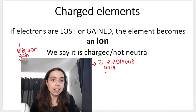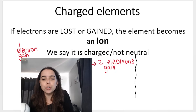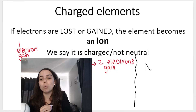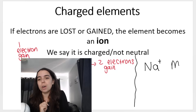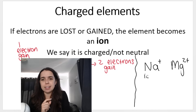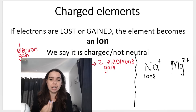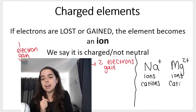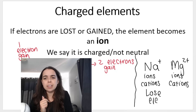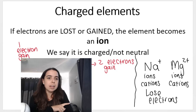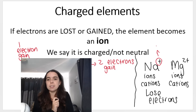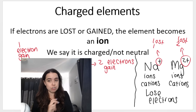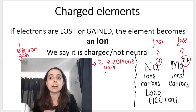An atom can also lose an electron. If you lose something that's negative, you become positive — you form what we call a cation. Examples are Na⁺ or Mg²⁺. These are ions because they're no longer neutral — they have a positive charge. A charge of plus one means you lost one electron; plus two means you lost two electrons; plus three means you lost three electrons, and so on.